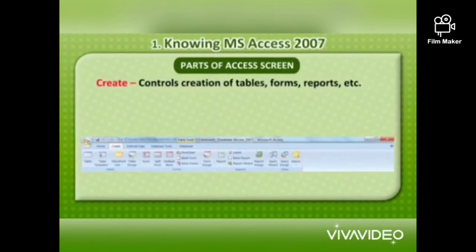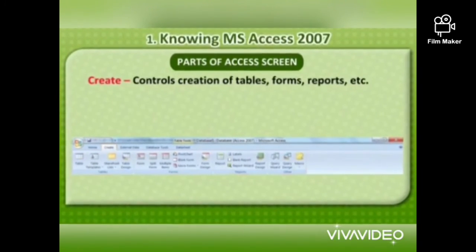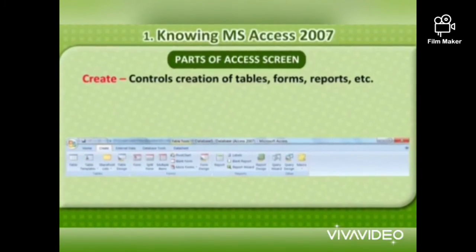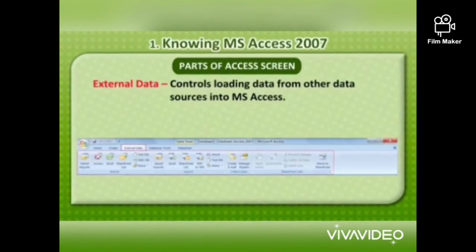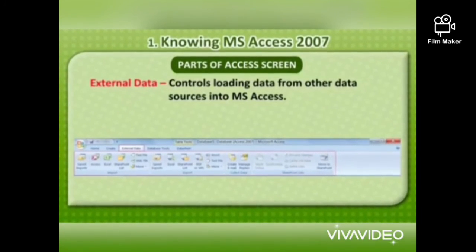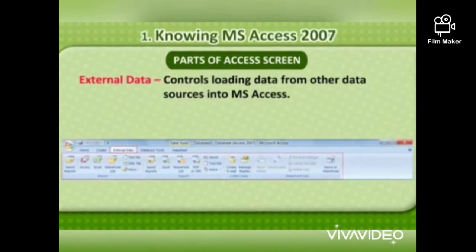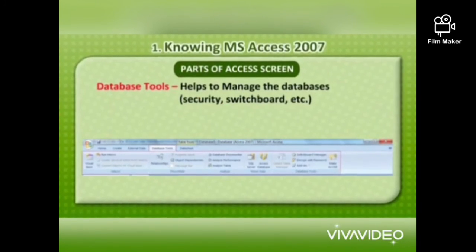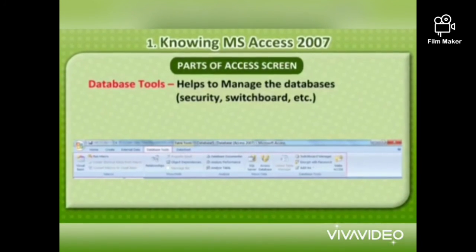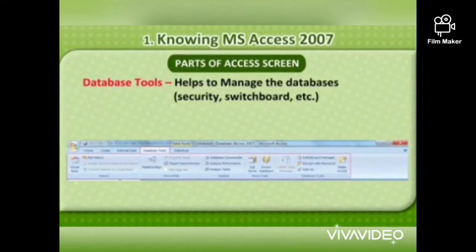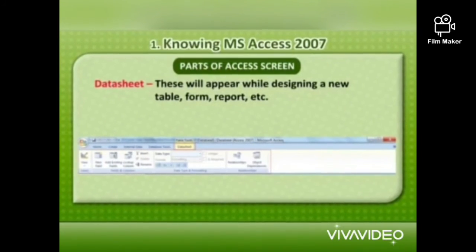How many parts does the Access screen have? The following components will appear on the screen. The title bar is located at the top in the center of the Access window. It displays the name of the database on which you are currently working. The ribbon: the following tabs will appear at the top ribbon.